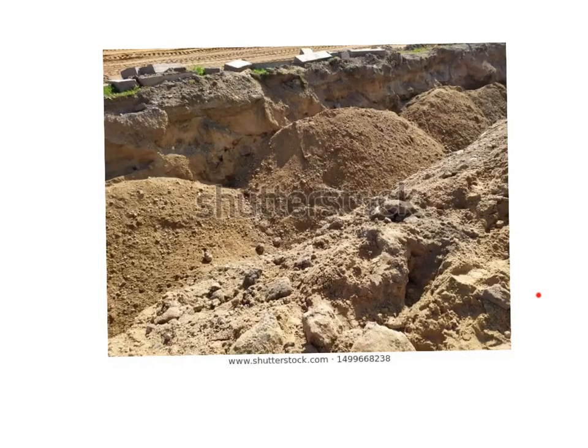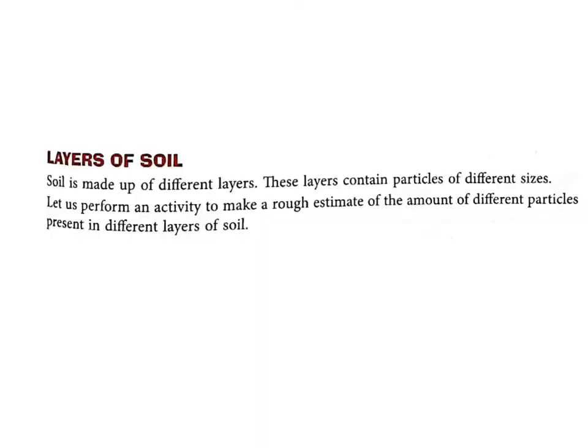As it is very difficult to go out and search for various soils, I am showing you a few samples. This one is the soil from a garden — we call it garden soil. Please observe it carefully. This soil is normally found in playgrounds. And this is the soil which is normally seen at construction sites. I hope you can easily differentiate between different types of soil.